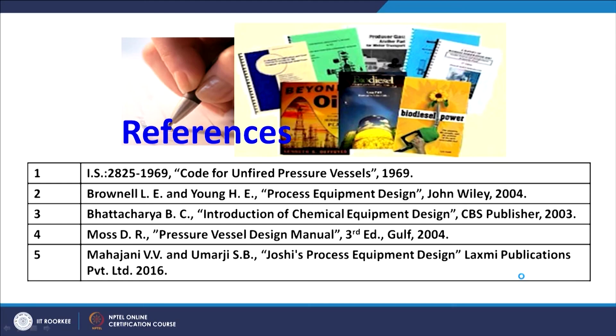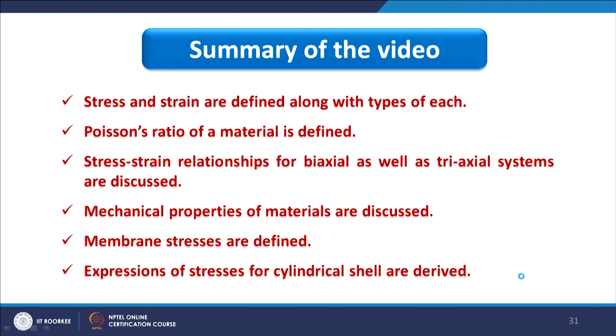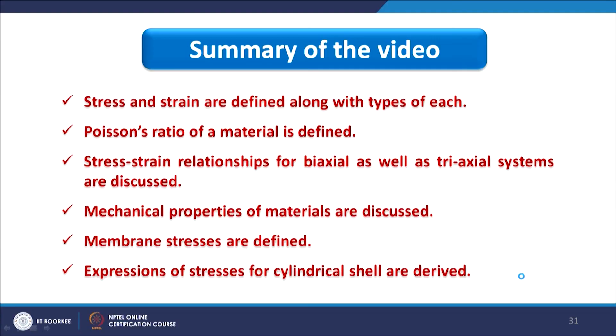Reference books are available for detailed study. The summary for lectures 2 and 3 covers: stress and strain defined with types; Poisson's ratio defined; stress-strain relationships for biaxial and triaxial systems; mechanical properties of materials; and membrane stresses defined with expressions derived for cylindrical shells. This concludes how to compute thickness for membrane stresses and derive stress-strain relationships for a given system.